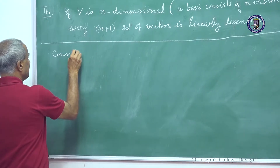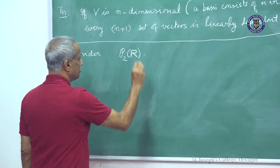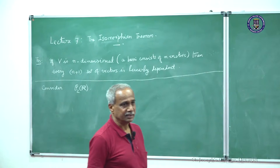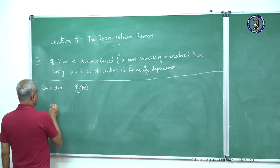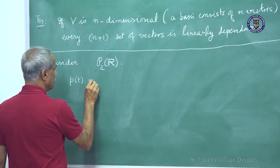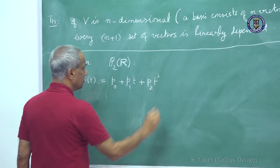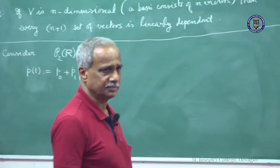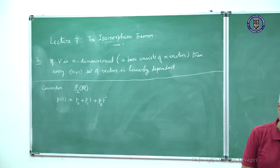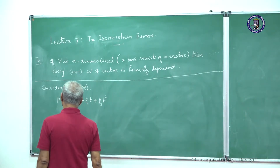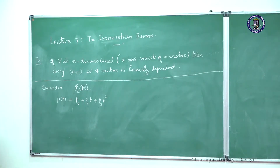Consider P2R. What is P2R? All polynomials of degree less than or equal to 2, including 0. So a typical member of P2R is a polynomial like t squared. You know that if Q(t) is another member, you have addition and scalar multiplication defined — it forms a vector space. The zero element is the polynomial with P0 equal to 0, P1 equal to 0, P2 equal to 0. So P2 is a vector space over R.